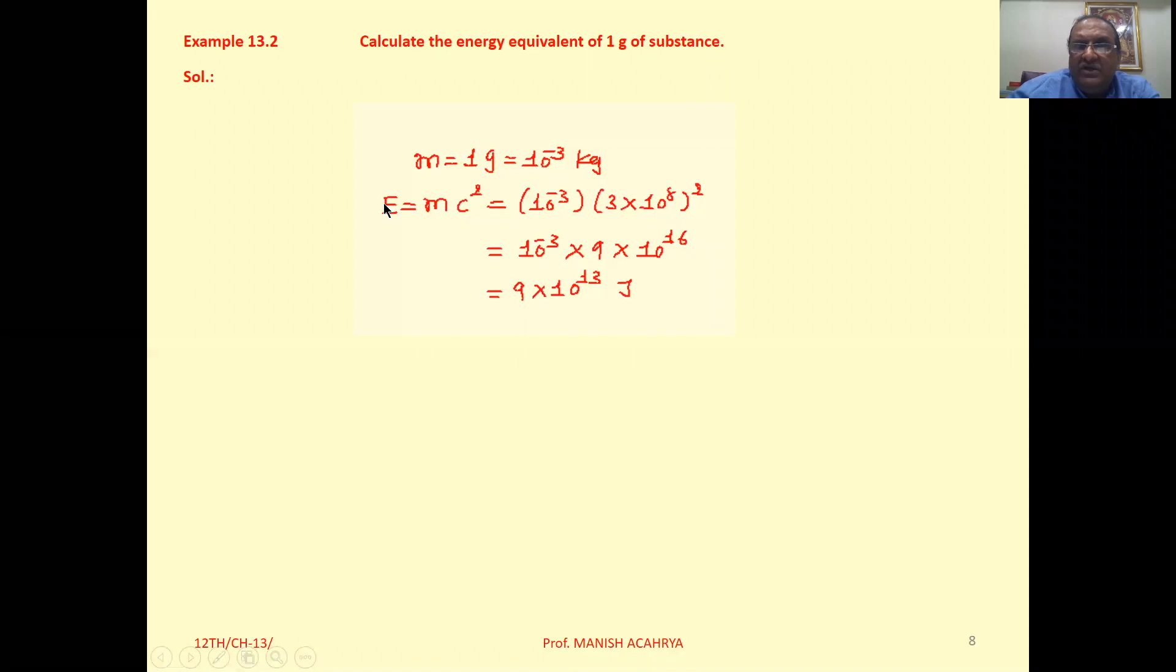Energy equivalent to it, that is mc square. Mass is 10 raised to minus 3 into c square, that is 3 into 10 raised to 8 whole square. So 10 raised to minus 3 into 9 into 10 raised to 16. Finally, you will get 9 into 10 raised to 13 joule.